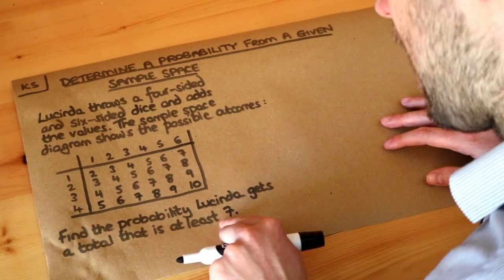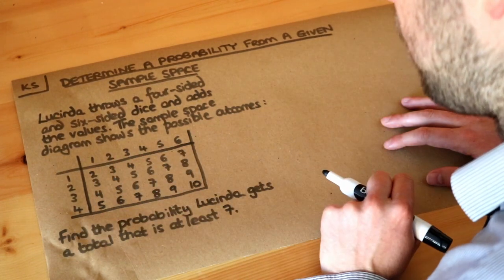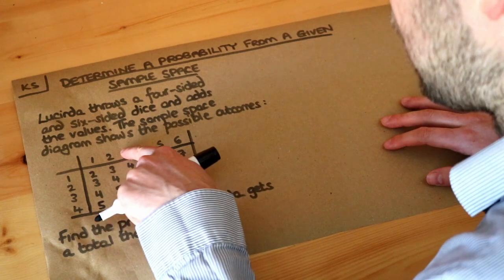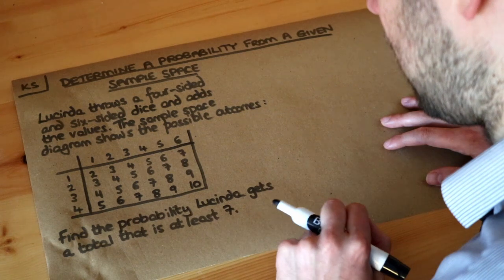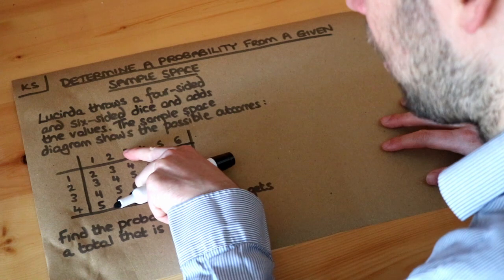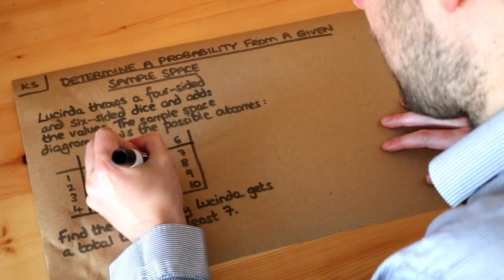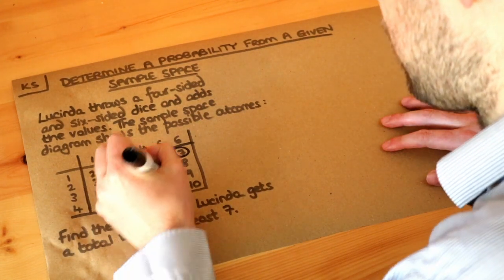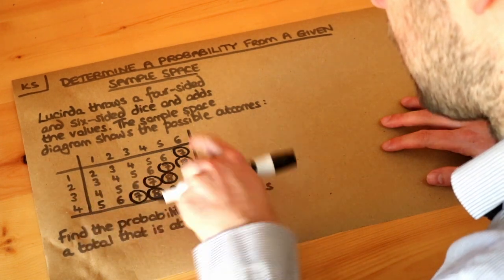Now we want to find the probability that we get at least seven. Out of these 24 possible outcomes, how many have a combined total of at least seven? Here we get a total of at least seven — that's three on one dice and four on the other dice. We could get a seven here, a seven here, a seven here. Eight is at least seven — it's more than seven — so these are possible as well; that's where we got a six on one dice and a two on the other dice.